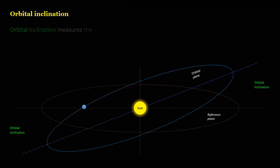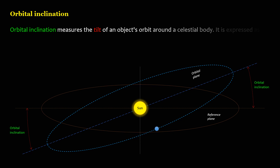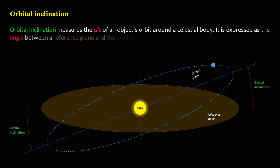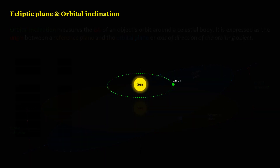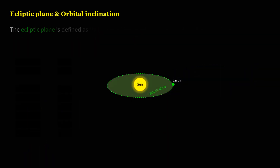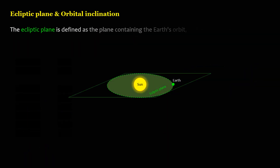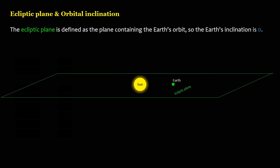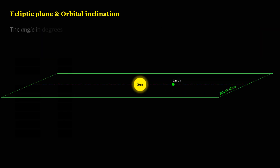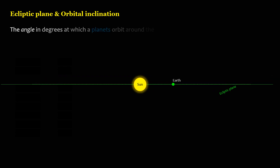Orbital inclination measures the tilt of an object's orbit around a celestial body. It is expressed as the angle between a reference plane and the orbital plane or axis of direction of the orbiting object. The ecliptic plane is defined as the plane containing the Earth's orbit, so the Earth's inclination is zero. The angle in degrees at which a planet's orbit around the Sun is tilted relative to the ecliptic plane.